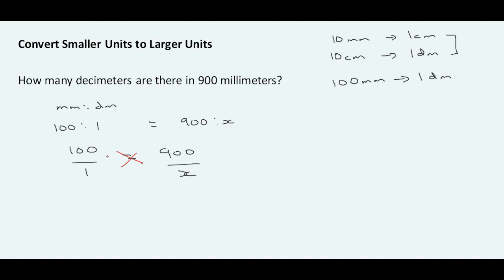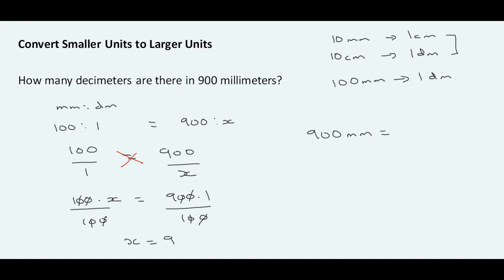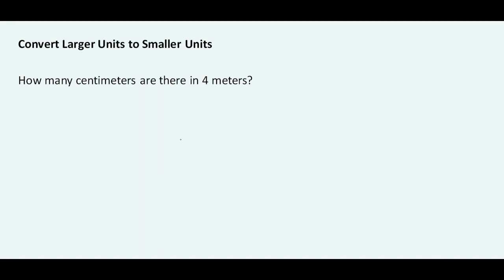Cross-multiplying gives us 100 times X equals 900 times 1. Dividing both sides by 100 and cancelling the zeros, X equals 9. Therefore, 900 millimeters is equal to 9 decimeters.